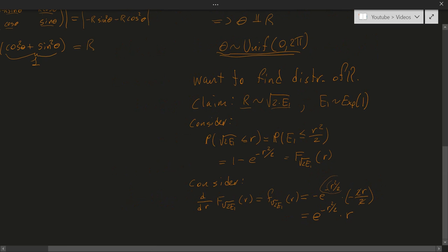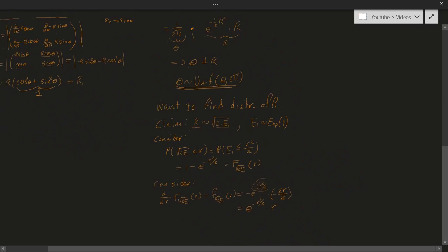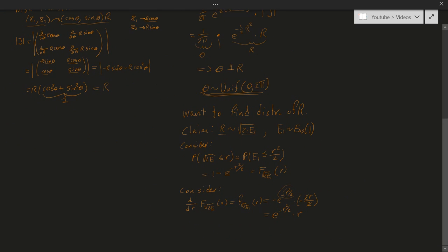And up here, that is exactly the density of our r. Up here I just used a large r instead of a small r. So r has the same distribution as square root 2 times a standard exponential. So, now we are actually done.